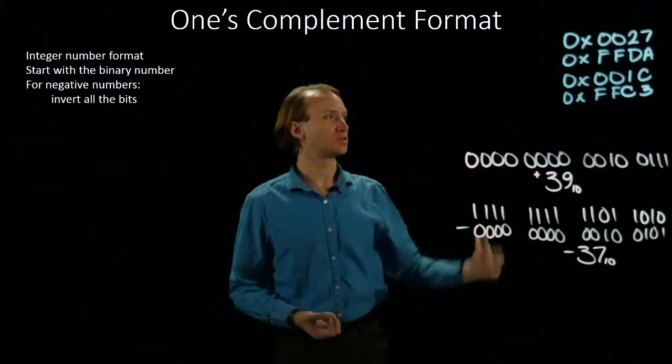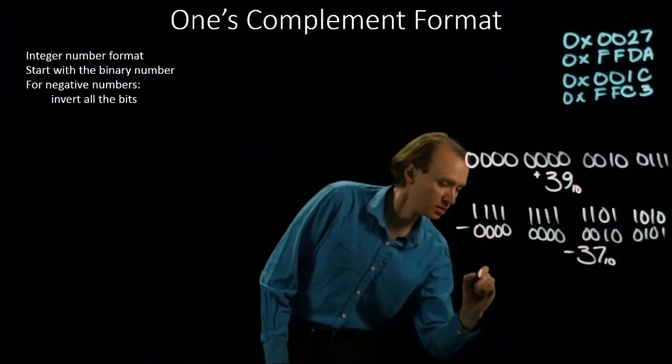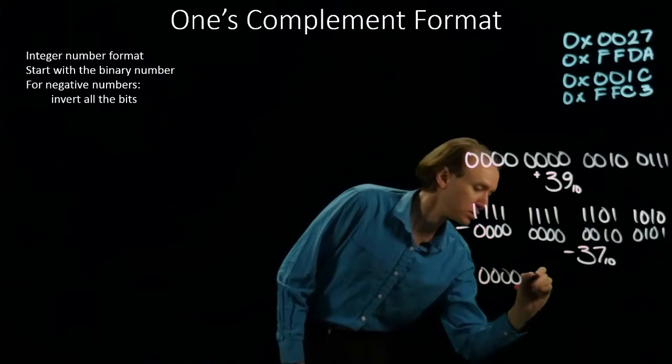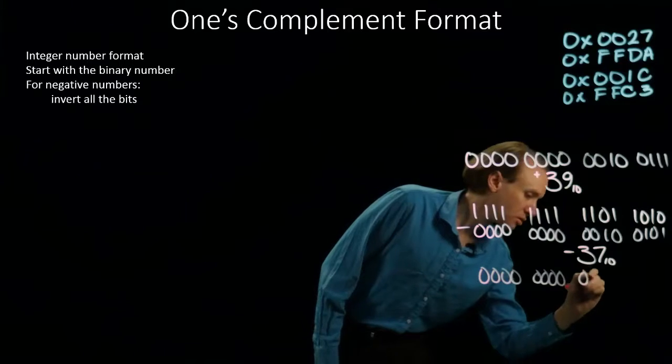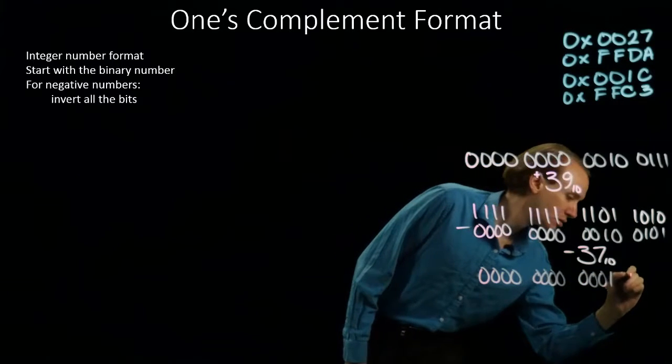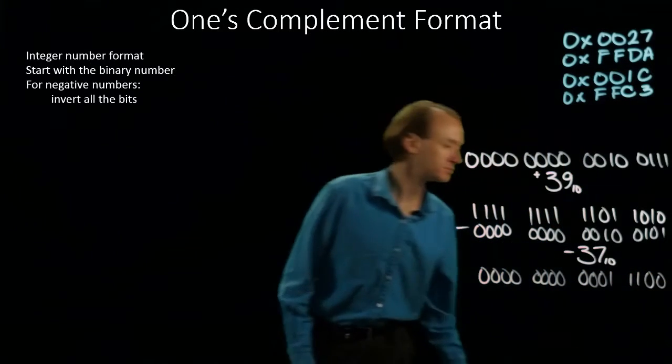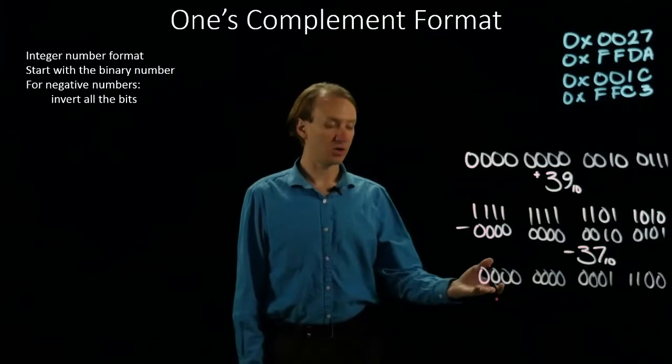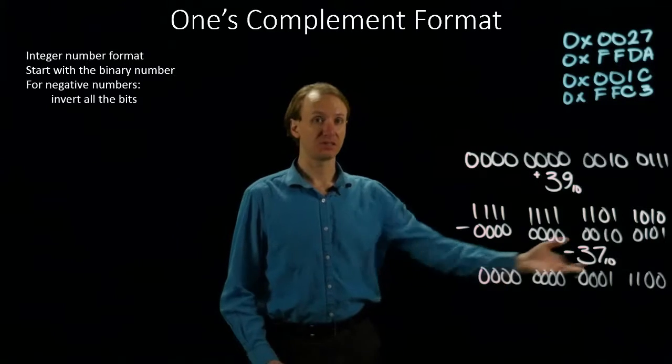Our third example is 1C. This time, our leading bit is a 0. That means this is a positive number, and we can just read off the bits.